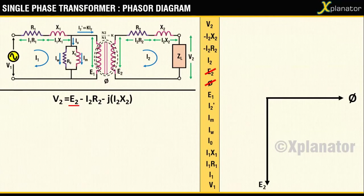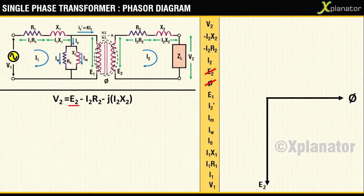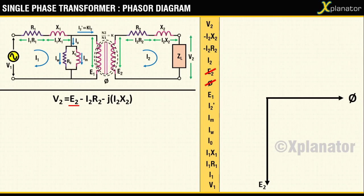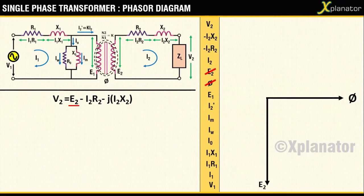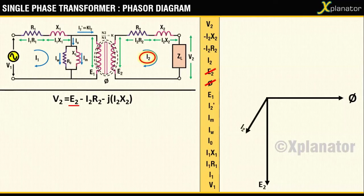To plot the next two terms of the equation, which are both potential drops—that is, minus I2R2 and minus j times I2X2—you will need to know the position of current I2. In the secondary circuit, with the voltage source as E2 and inductive load of ZL, the secondary current I2 will lag E2. Draw I2 according to this.